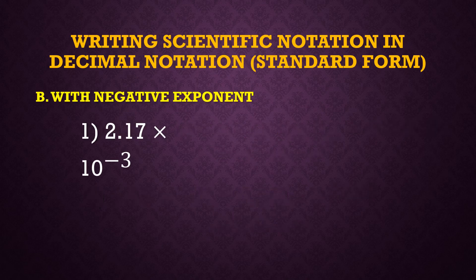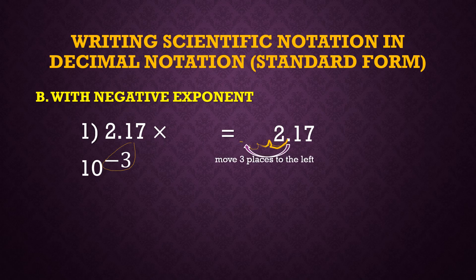For a negative exponent, we have 2.17 times 10 raised to negative 3. Starting with 2.17, we move the decimal point to the left 3 times — 1, 2, 3 — and annex zeros in the empty places. The result is 0.00217.